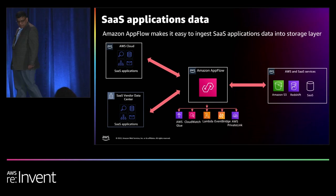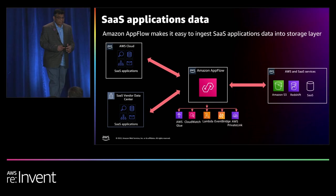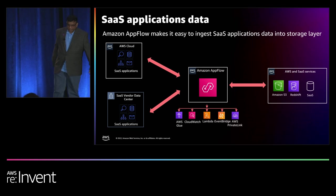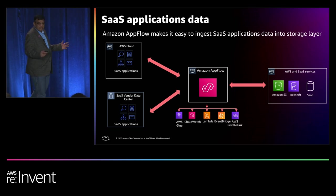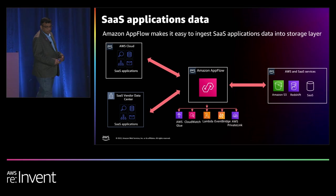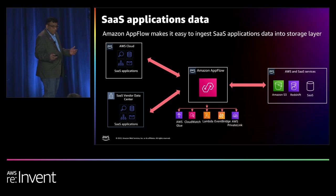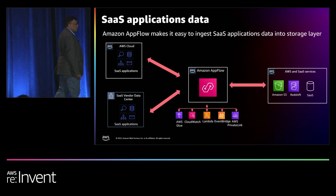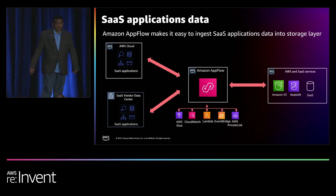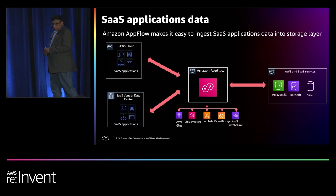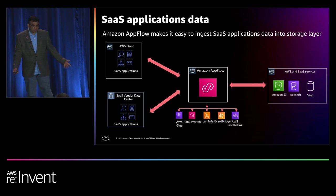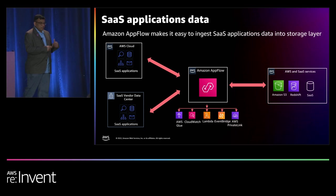SaaS application data: the adoption of SaaS application usage is rapidly increasing. Many organizations would like to bring SaaS application data to unlock its value and derive data-driven insights. Amazon AppFlow is a fully managed service that can connect to various SaaS applications like Salesforce, ServiceNow, DataDog, and then ingest SaaS application data into your Amazon S3 data lake landing zone or Amazon Redshift data warehouse staging tables. Amazon AppFlow has a native integration with AWS Glue and CloudWatch Events so that you can build data ingestion pipelines seamlessly.